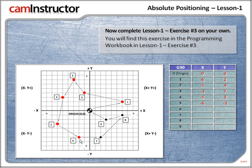Next up, off to position 6. For the x, it's going to be negative: 1, 2. So x is negative 2. For the y, it's below the x-axis, so it's going to be a y negative. How much? 1, 2, 3, 4, 5, 6. So for position 6, x minus 2 and y minus 6.